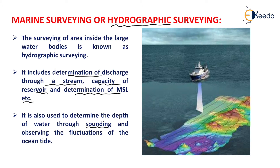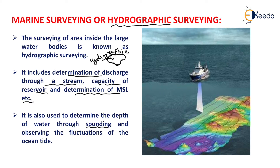If there is a water body within a marked boundary line and we are moving over the land along that line, it is known as topographic surveying. But if we put one leg inside the water, then that surveying is known as hydrographic or marine surveying. So moving over the boundary of a water body is topographic surveying, while entering the water body makes it marine or hydrographic surveying. It is generally used to determine mean sea level, which is a point of permanent benchmark used for leveling work.